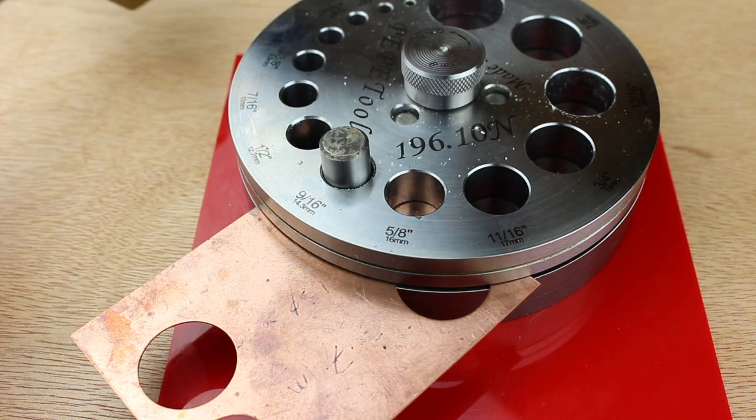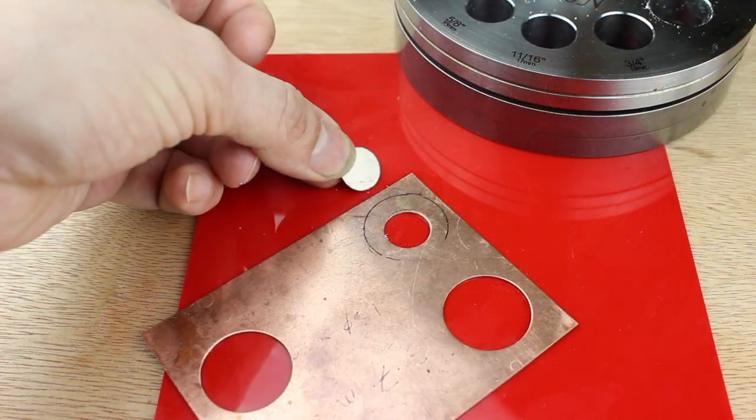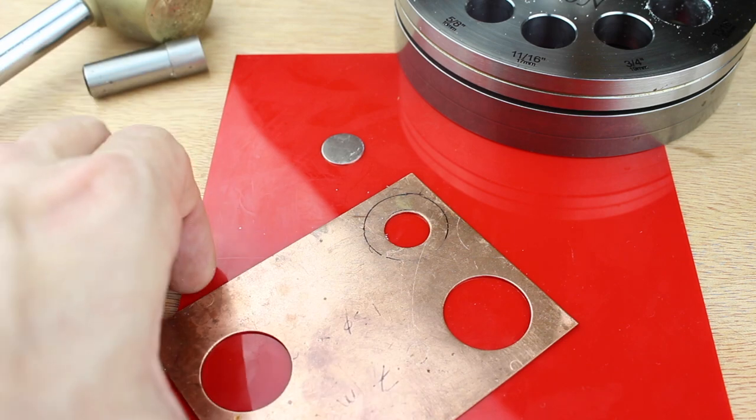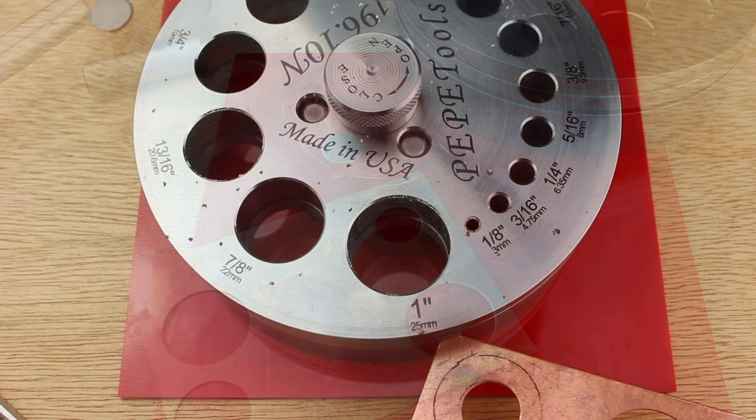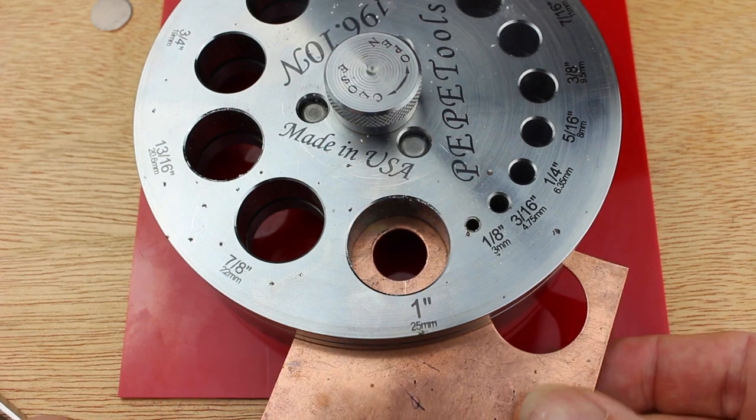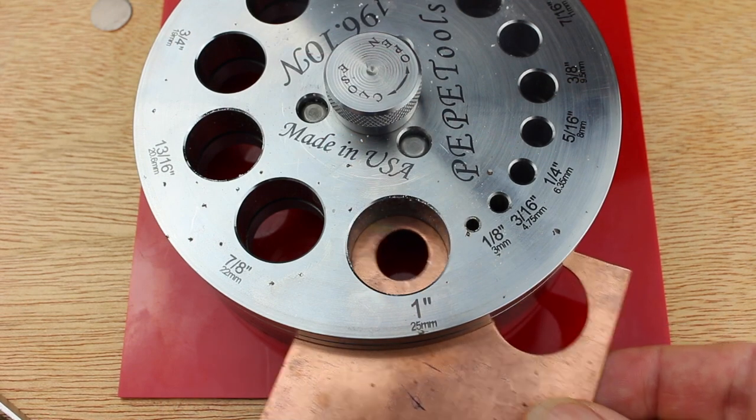Align up and punch out the smaller inner hole as normal. Again, check out my other video if you're new to this. Now remove your metal and place it under the larger hole. Screw down the top but don't fully tighten it. It's important here that your metal can still move a little bit.